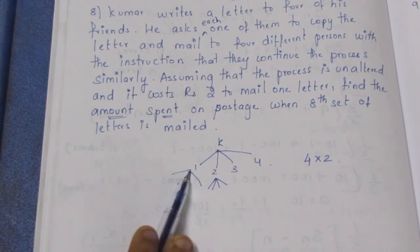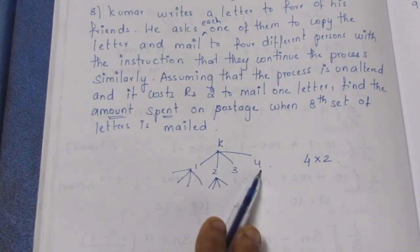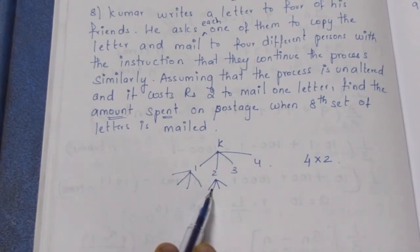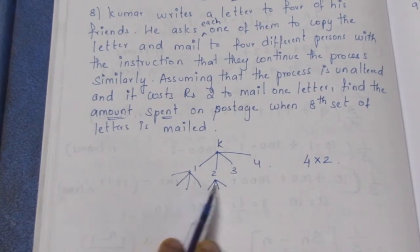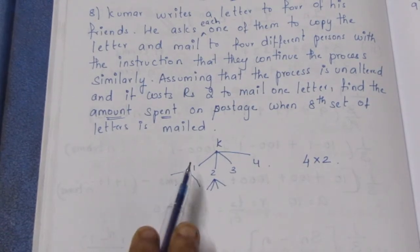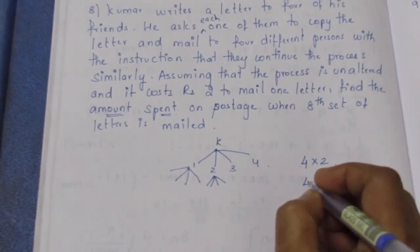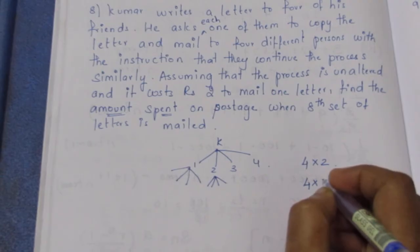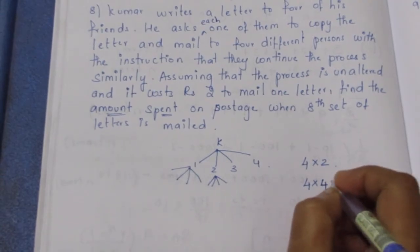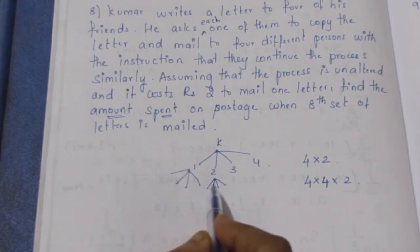For the first, I will have 4 letters. So 4 letters cost, 4 into 2 is 8. Second is 16. 4, 8, 12, 16. 4 into 2. 4 into 4 is 16 into 2. 4 letters, 4 letters. 4 times 4 into 4 is 16.